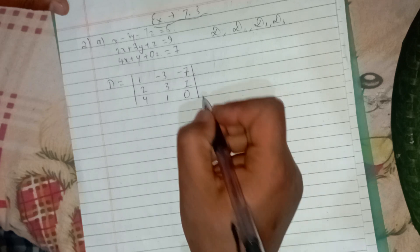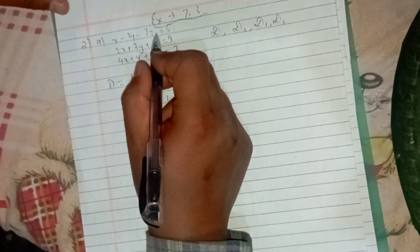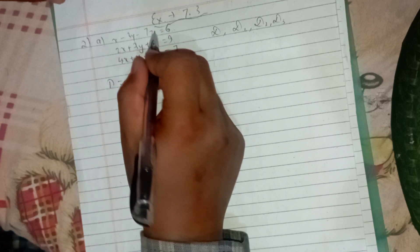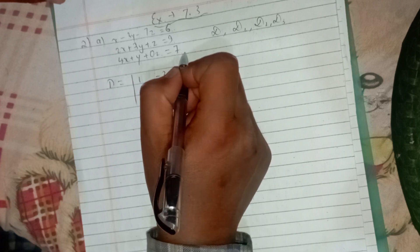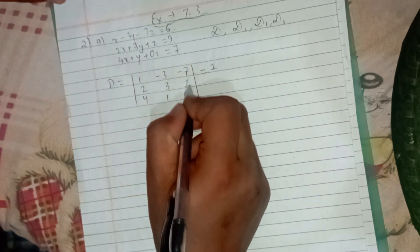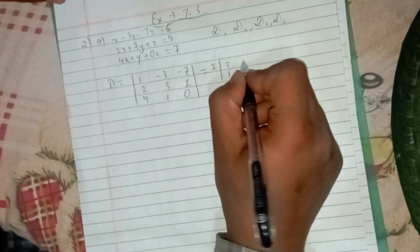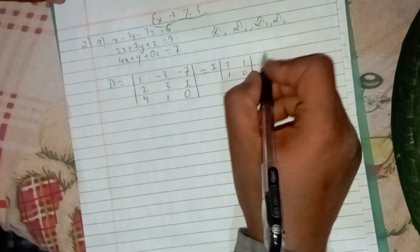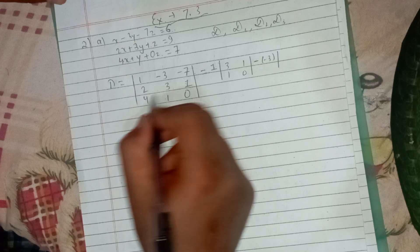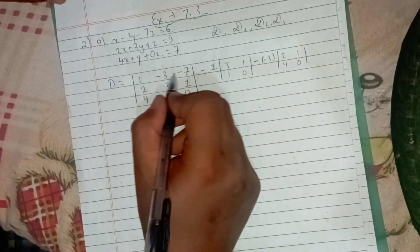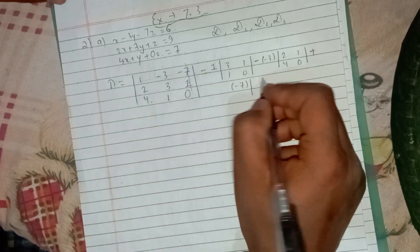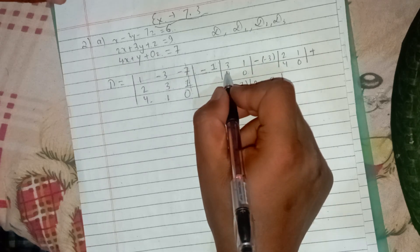Now computing the determinant. u1 is equal to 3, 1, 1, 0. If you have plus, then minus equals minus 3. We have equal to 2, 4, 1, 0. We have equal to minus 7. We have equal to 2, 3, 4, 1. We have equal to 3, 0, 0 and minus 1.